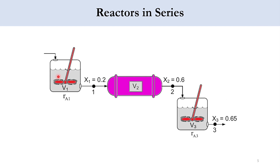There are three reactors in series: the first is a CSTR, the second is a PFR, and the third is again a CSTR, with volumes V1, V2, and V3 respectively. The feed enters the first reactor as FA0, with FA1, FA2, and FA3 at subsequent points. In the first reactor, 20% conversion takes place; at the end of the second reactor, 60%; and finally 65% conversion.